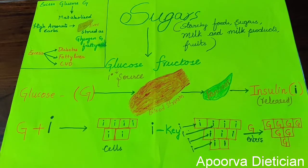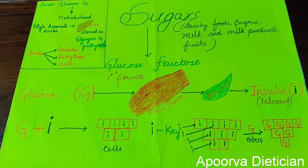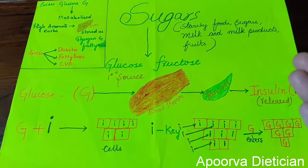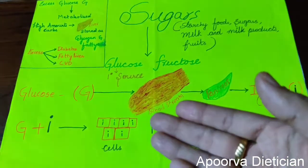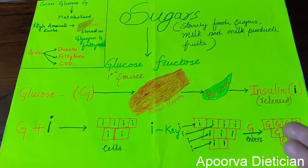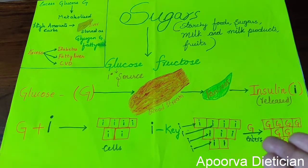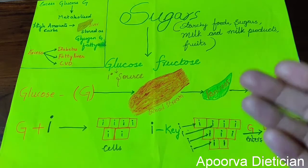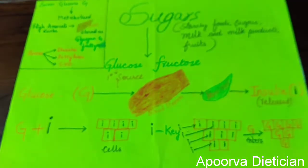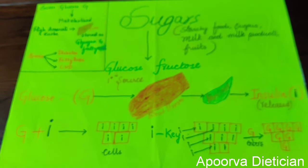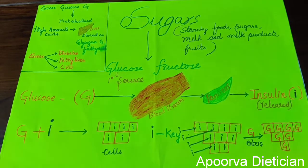As discussed in my previous video on carbohydrates, try to understand what are good carbs and what are bad carbs. Take good carbs in your diet so they help in performing various activities in your body rather than being stored and causing problems like diabetes, fatty liver, and cardiovascular diseases.